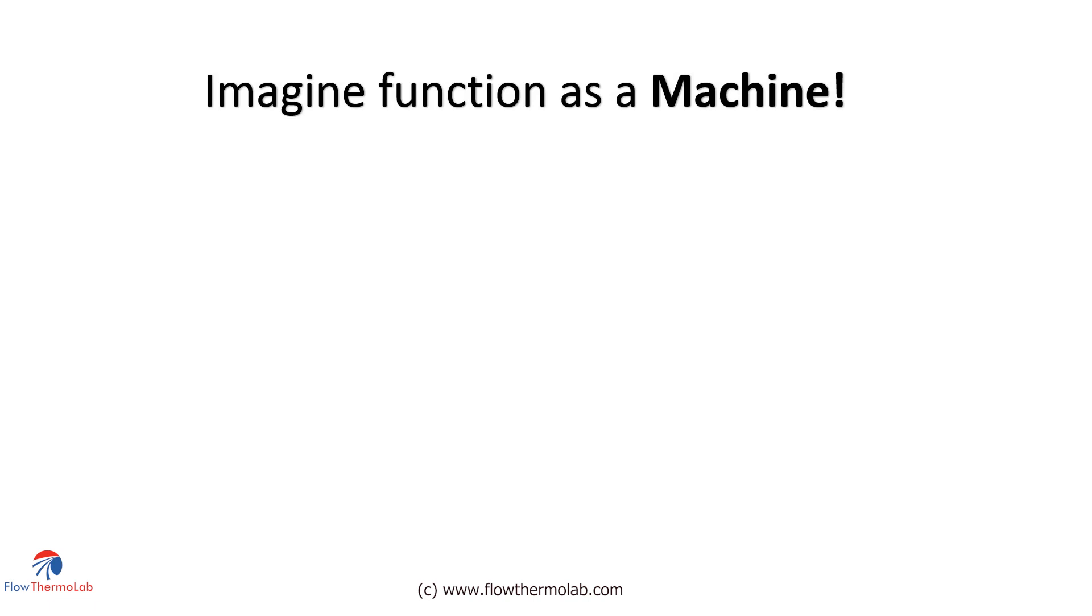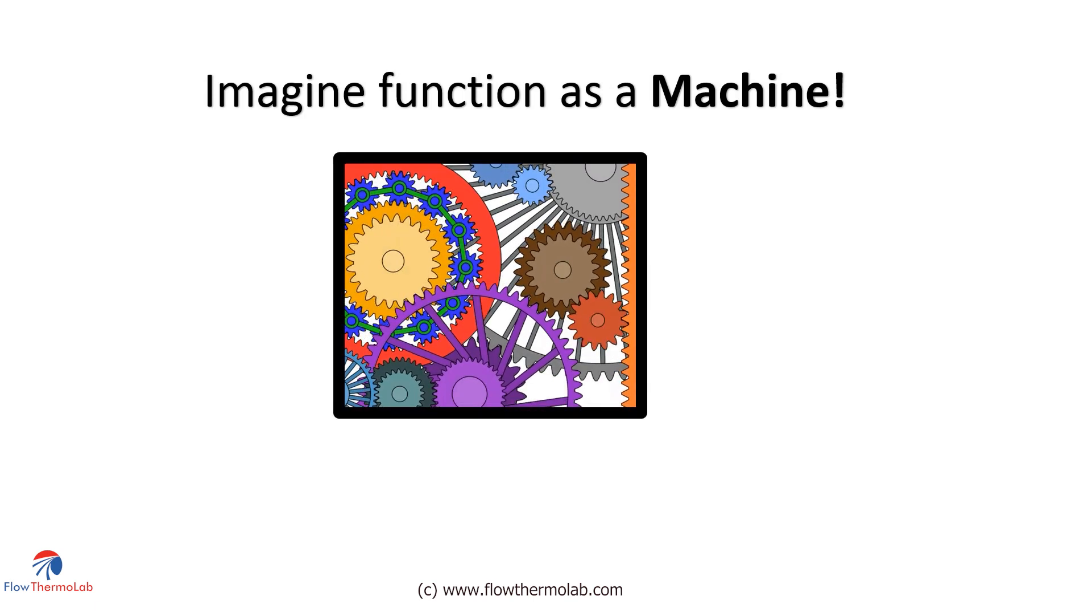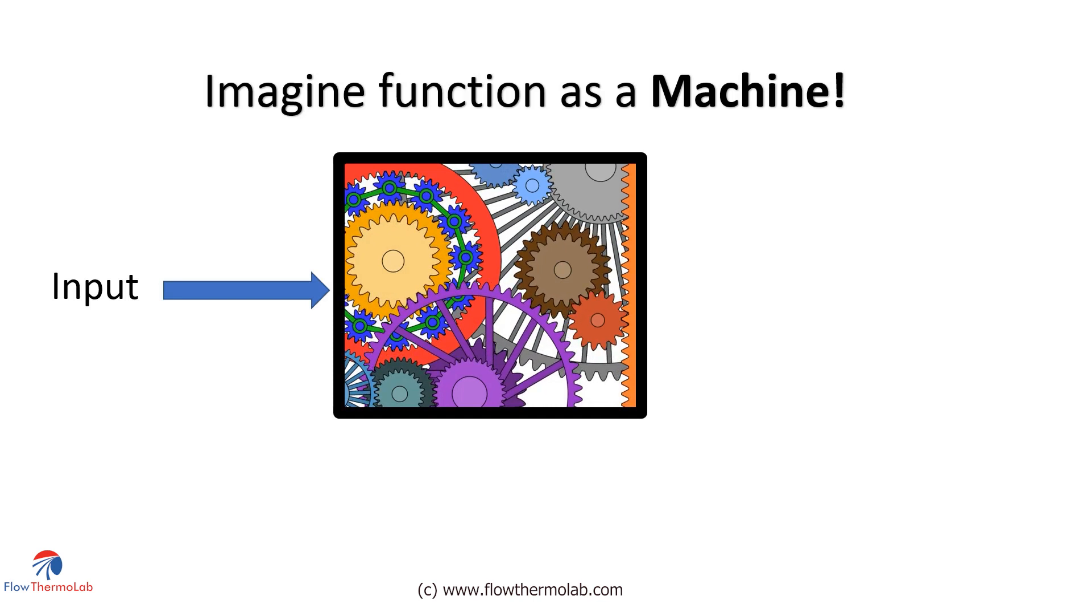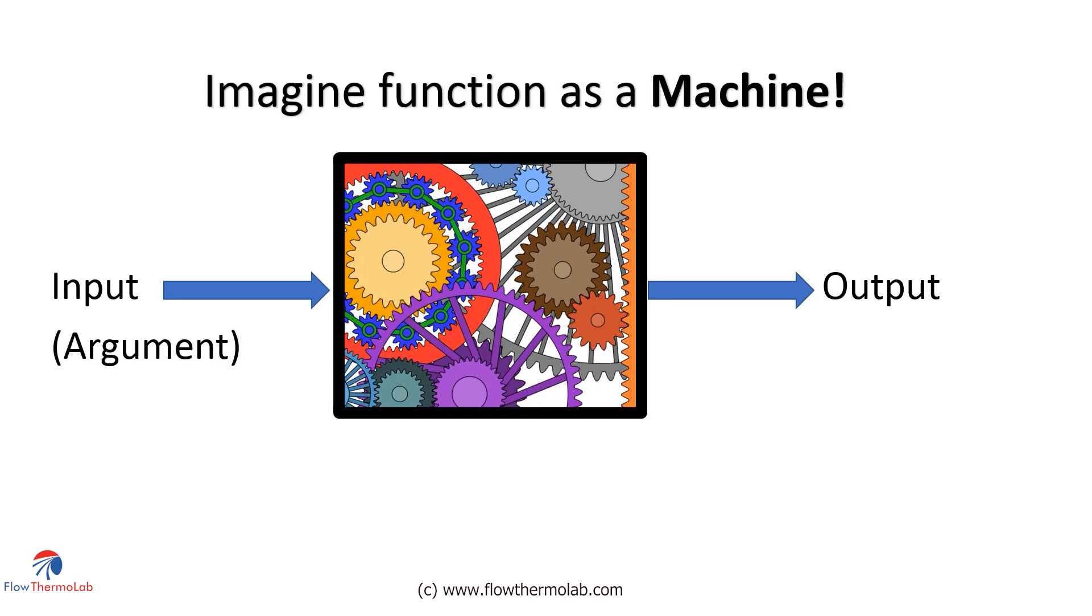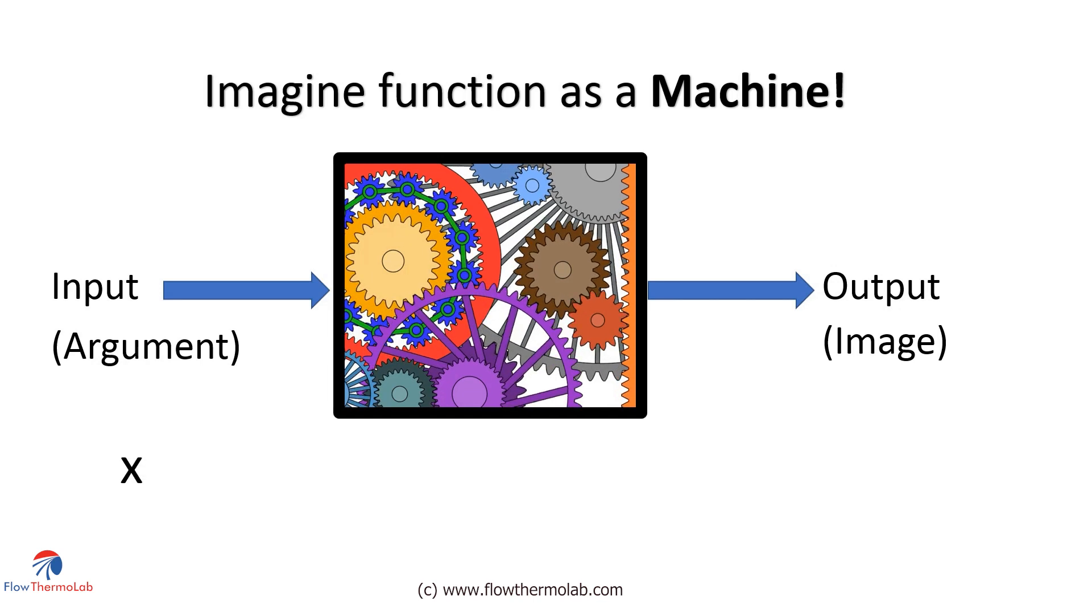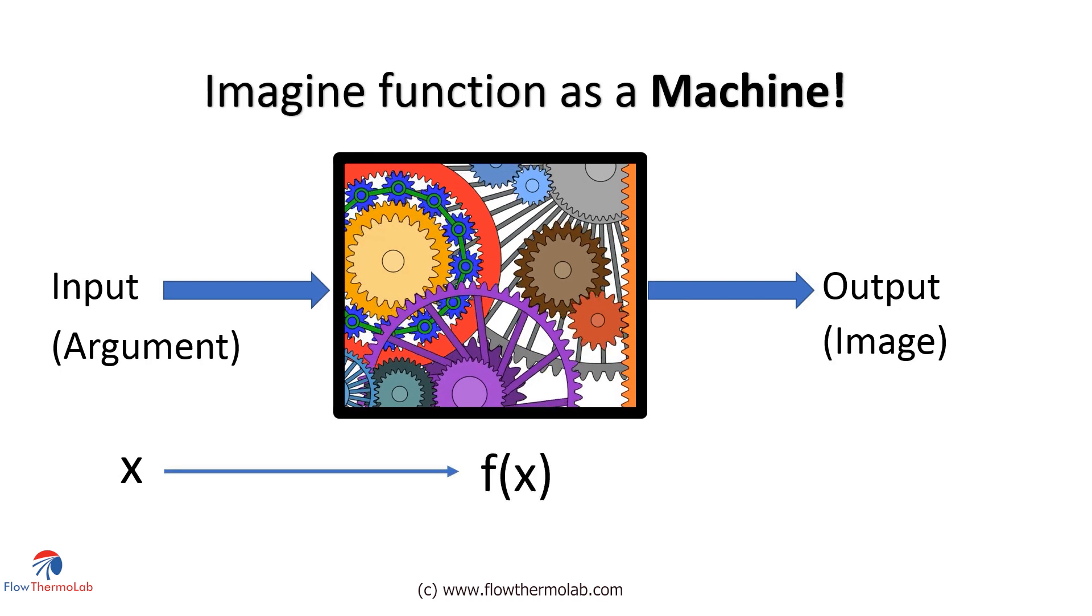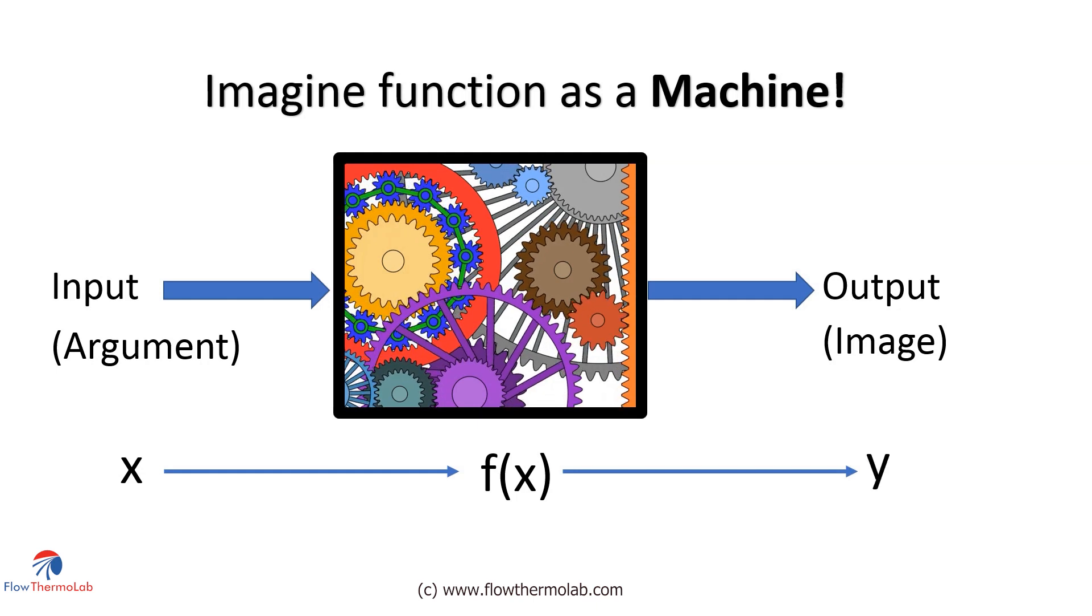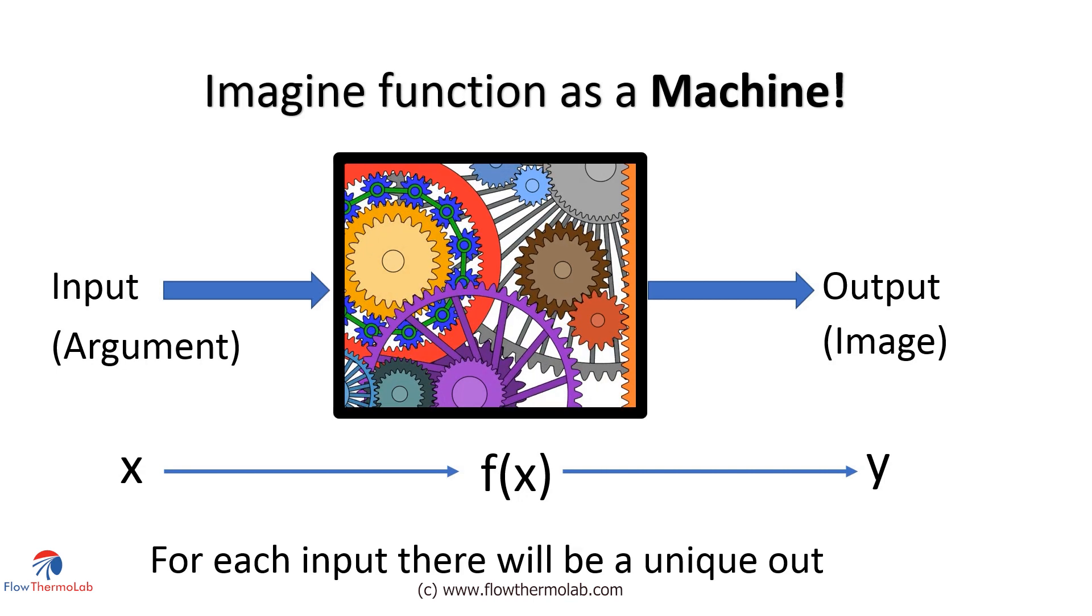Imagine function as a machine. You give some input to the machine. That machine will do some operation with your input and gives you an output. This input is also known as argument and the output is known as image. The input is also called as variable, let's say it is x. And the function f does some operation with this x. It does an f of x and gives us the output y. One thing you should keep in mind is that same input cannot give two different outputs. This is a property of function.